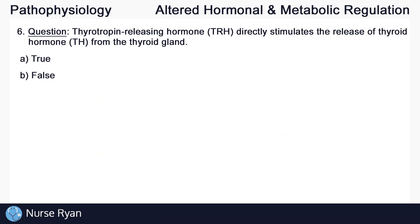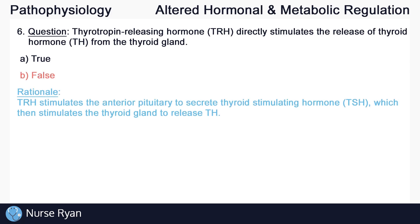This increases appetite because the body wants to consume more glucose as an attempt to convert glucose to energy. Question number six: thyrotropin releasing hormone directly stimulates the release of thyroid hormone from the thyroid gland — the answer here is B, false. Thyrotropin releasing hormone stimulates the anterior pituitary, not the thyroid gland, to secrete thyroid stimulating hormone. Thyroid stimulating hormone then stimulates the thyroid gland to release thyroid hormone.